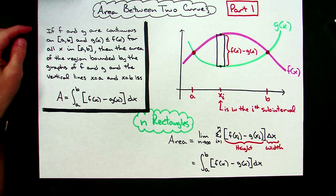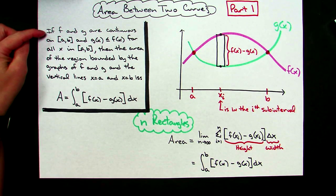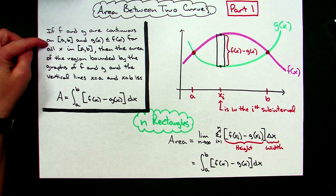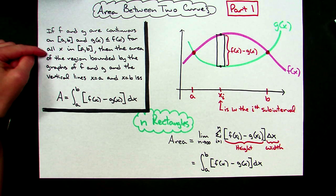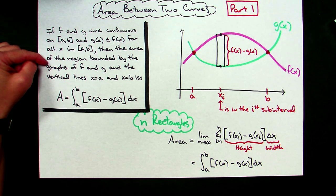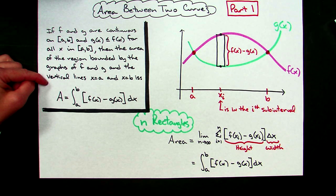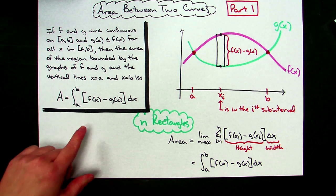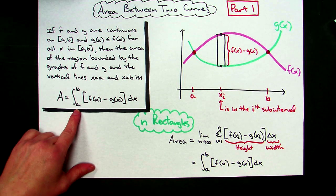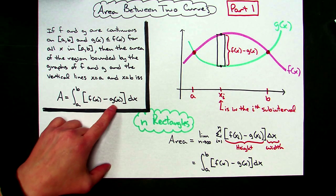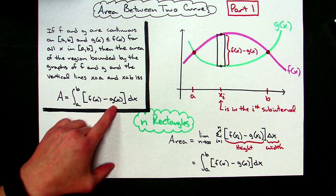A formal definition: if f and g are continuous on the closed interval from a to b, and g of x is less than or equal to f of x for all x in that closed interval from a to b, then the area of the region bounded by the graphs of f and g and the vertical lines x equals a and x equals b is the integral from a to b of f of x minus g of x dx.